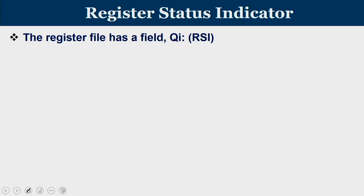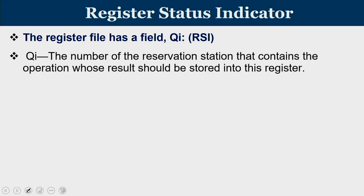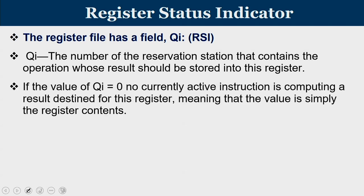The register file has a field called QI, which corresponds to the RSI. QI is the number of the reservation station whose operation will produce the result to be stored in that register. If QI equals 0, no currently active instruction is computing a result for this register, meaning the register file value is current. If QI equals N, the register will be updated by functional unit number N.